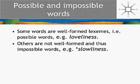Let's have a look at which rules are involved. '-ness' goes on the end of what? The rule for attaching '-ness' says that it must come on the end of adjectives. 'Lovely' is an adjective. 'Slowly,' however, is not an adjective — it's an adverb. And '-ness' doesn't go on the end of adverbs.